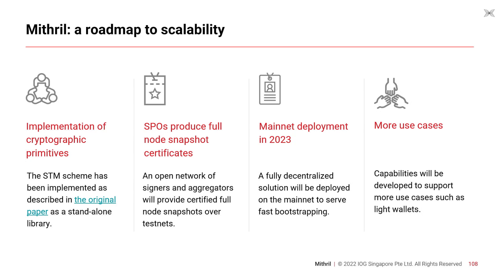We intend to reach a mainnet deployment in 2023. For this, we want a fully decentralized solution deployed to serve fast bootstrapping as our first objective. We also want to work on more use cases to develop new features such as light wallets, increasing our capabilities and working on new applications.